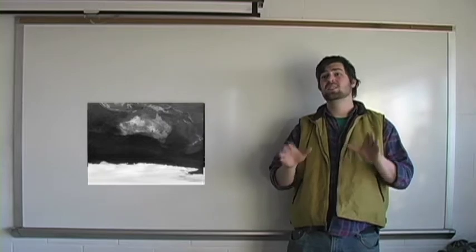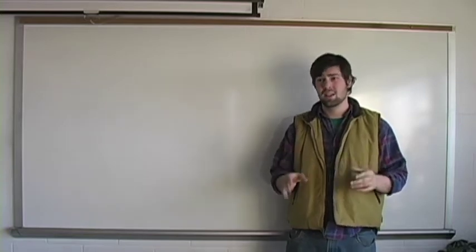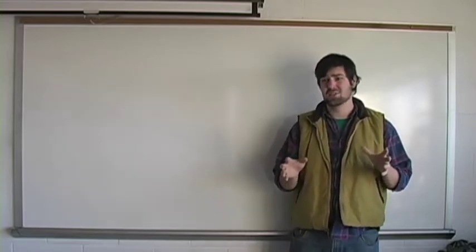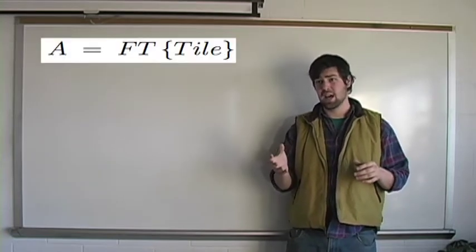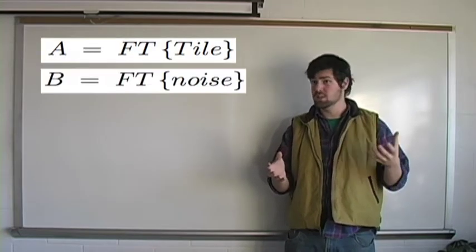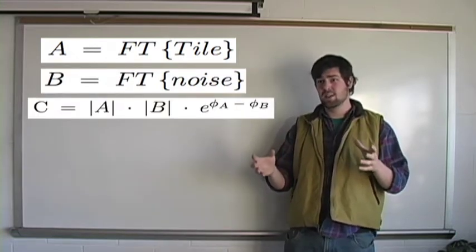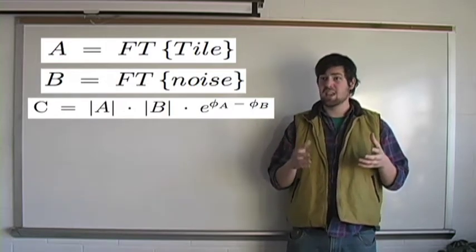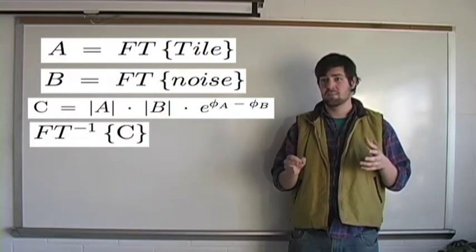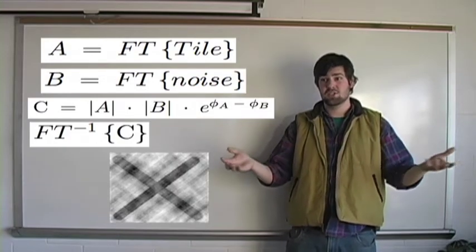Now this next part, this is the tricky part. We have to do what's called a cyclic correlation, which in the spatial domain is a pain in the butt. Luckily, it's relatively easy to do when we're in the frequency domain. First we take the Fourier transfer of the tile, and then we take the Fourier transfer of our noise image that we created earlier. We multiply their magnitudes, and then subtract their phases, as is seen in this equation here. Then we take the inverse Fourier transfer of all that, and after this cyclic correlation, we have our secret message extracted.